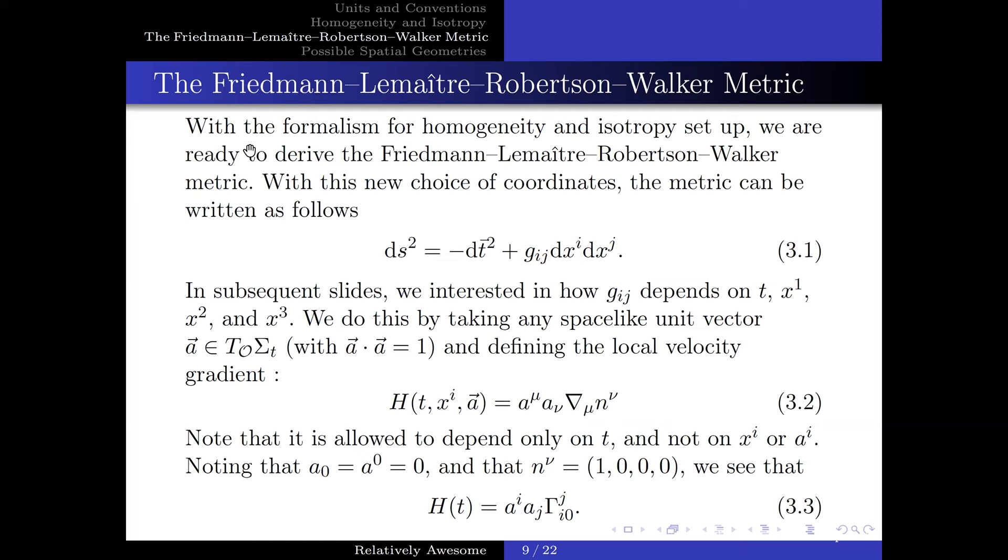With the formalism of homogeneity and isotropy set up, we are now ready to derive the Friedmann-Lemaître-Robertson-Walker metric. With this new choice of coordinates, the metric can be written in the following manner. In subsequent slides, we are interested in how g_ij depends on t, x^1, x^2, and x^3. We do this by taking any spacelike unit vector and defining a local velocity gradient. Note that the local velocity gradient can only depend on t and not on x^i or a^i. Noting this, we have a_0 equals a^0 equals 0 and n^ν equals (1, 0, 0, 0).